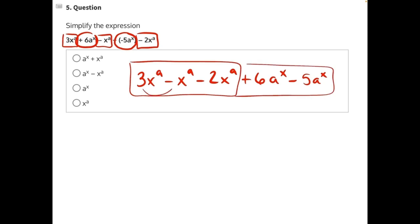3 minus, if it exists, there's always one of them, 3 minus 1 will give us 2x to the a minus 2x to the a. 2x to the a minus 2x to the a will just give us 0. So there should be no x to the a in our final answer.